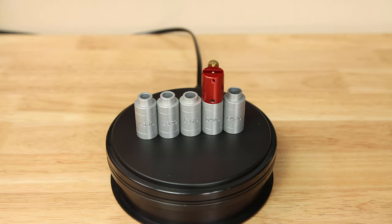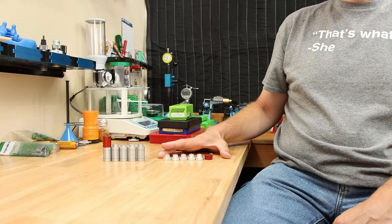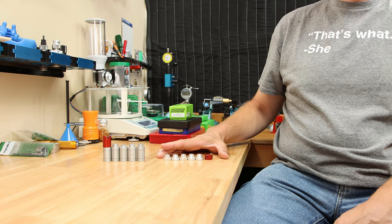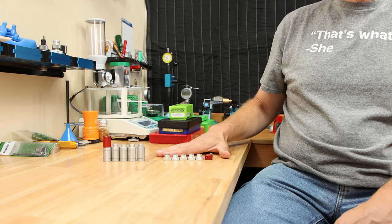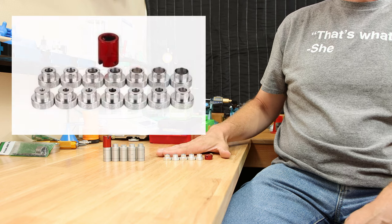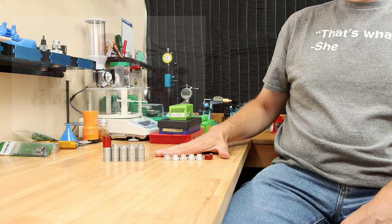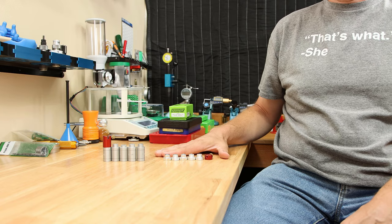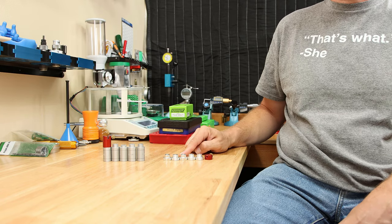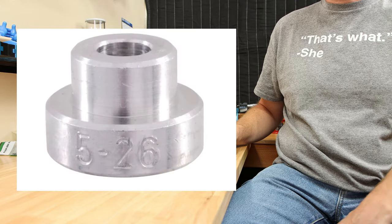Hornady's headspace kit right now is running somewhere in the ballpark of $45, depending on where you get it from. And the projectile comparator set, depending on which one you get, can run anywhere from the six insert set is somewhere around $34. You can get all the way up to 14 different inserts, depending on what projectiles you're going to be using that's going to run right up against that $50 mark.